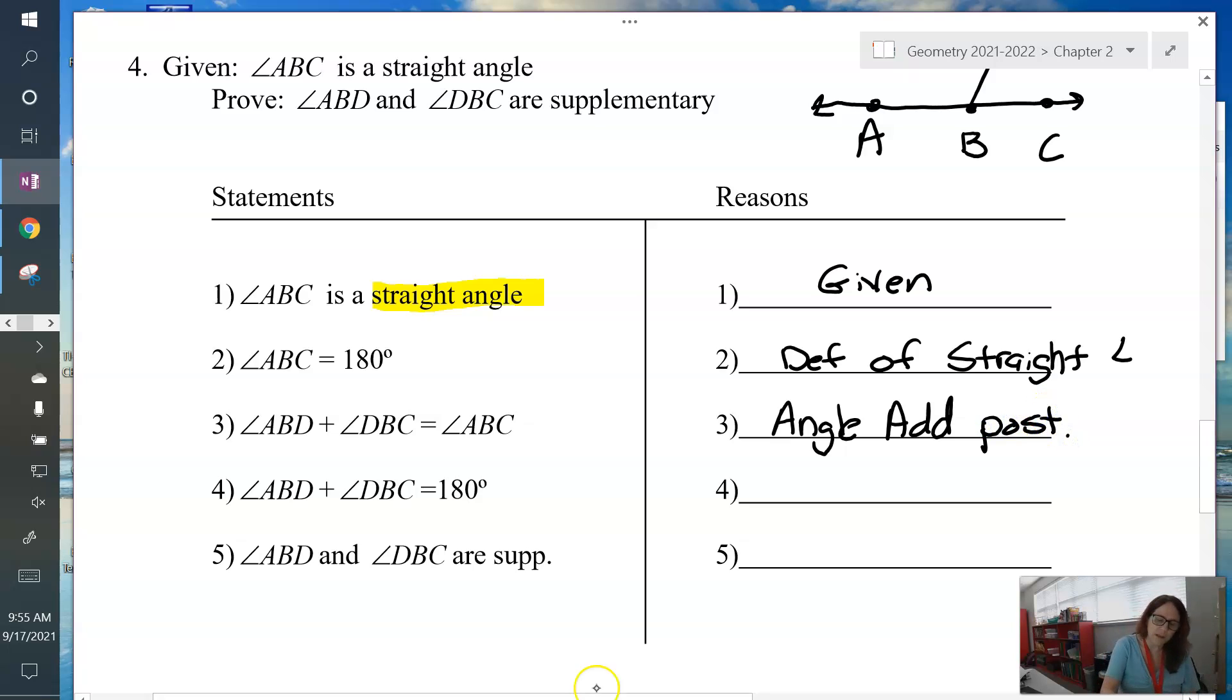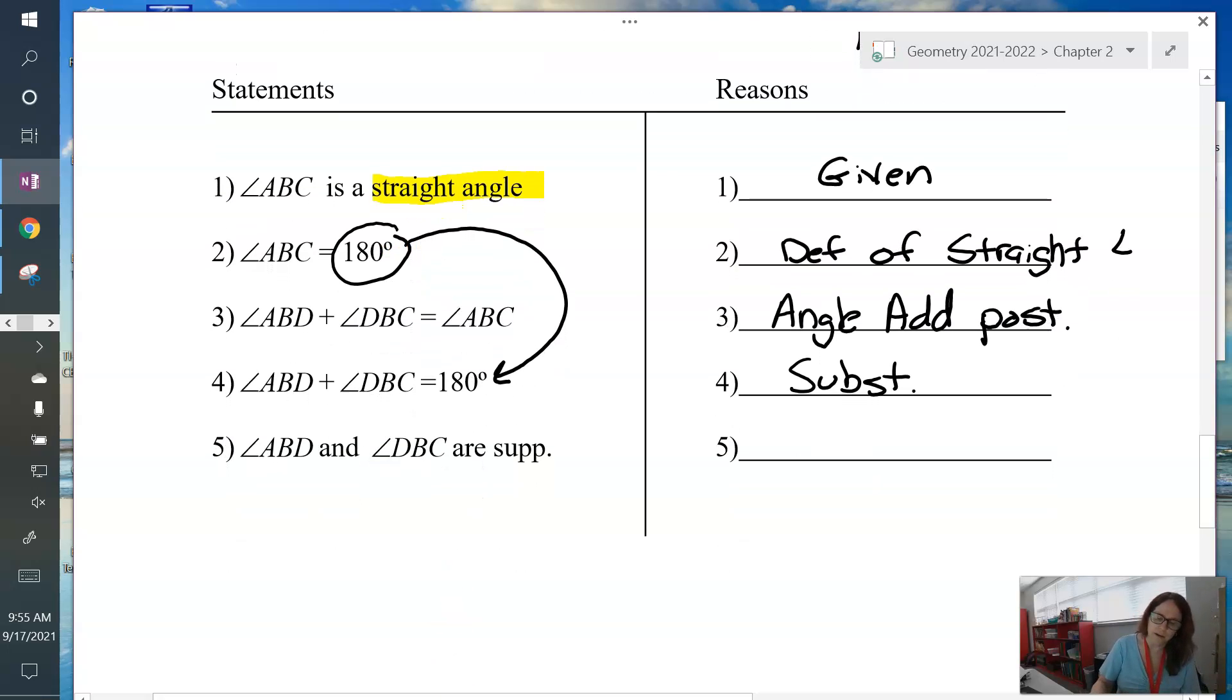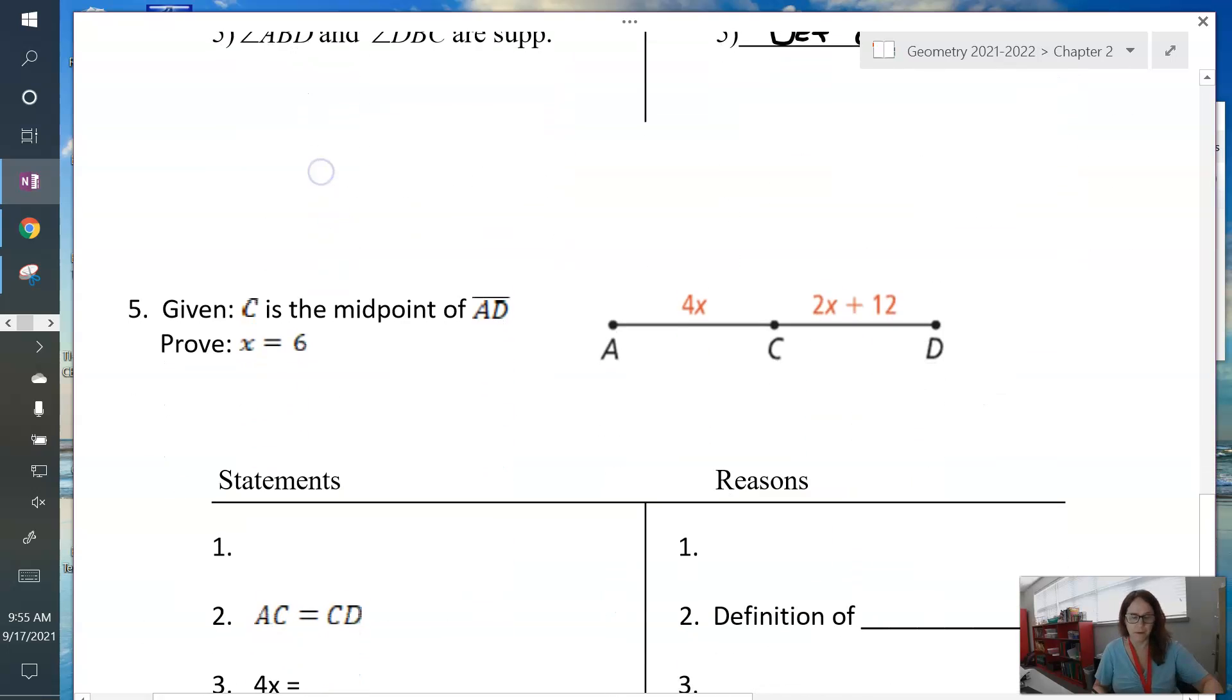And then just like that last example, 180 got plugged in there. So angle ABC went away and 180 went into its place. We call that substitution. And then look at it, we've got two angles adding up to 180 and we're now saying they're supplementary. That's definition of supplementary.